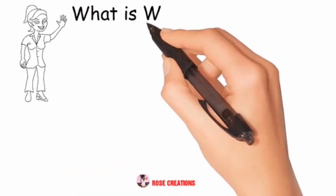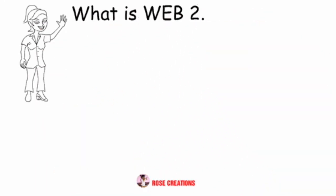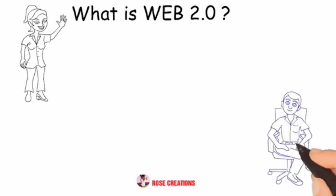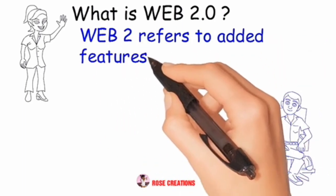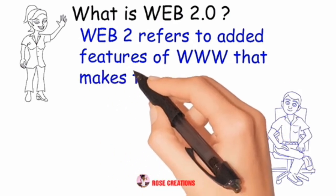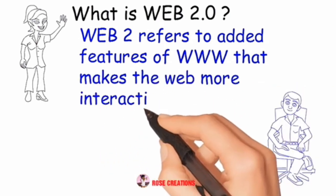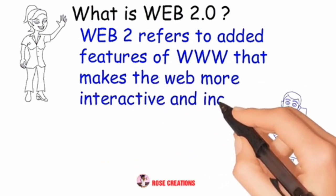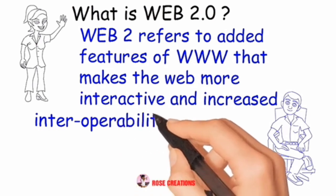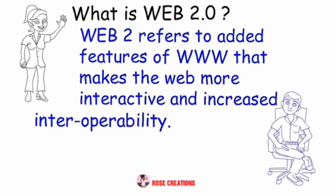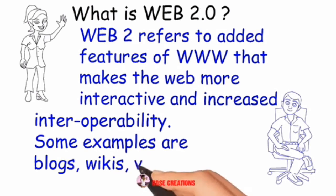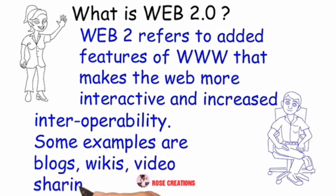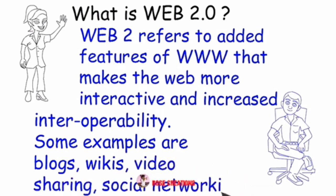What is Web 2.0? Web 2.0 refers to added features of the WWW that make the web more interactive and increase interoperability. Some examples are blogs, wikis, video sharing, and social networking.